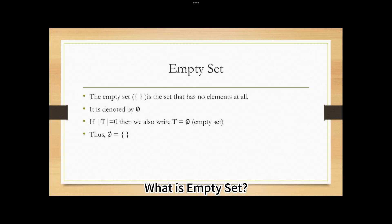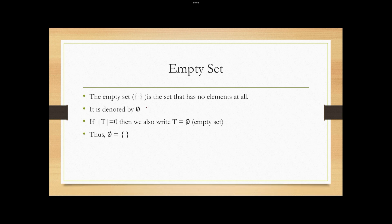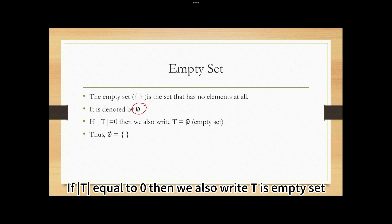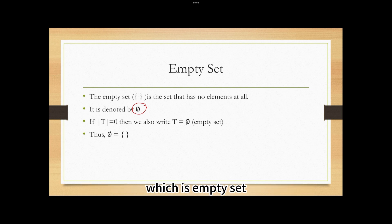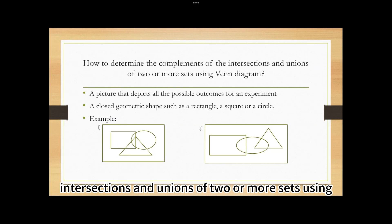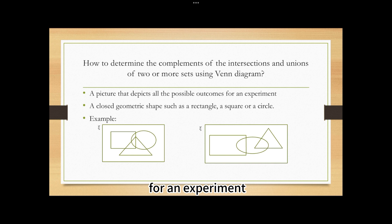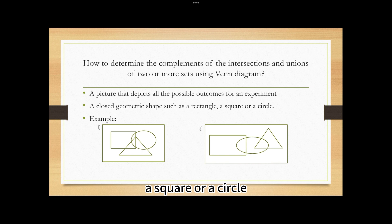What is an empty set? The empty set is the set that has no elements at all. It is denoted by ∅ or {}. If T equals zero elements, then we write T as the empty set. These two symbols have the same meaning. Now, how do we determine the complements of intersections and unions of two or more sets using a Venn diagram? A Venn diagram is a picture that depicts all possible outcomes, using closed geometric shapes such as a rectangle, square, or circle.